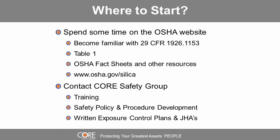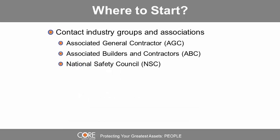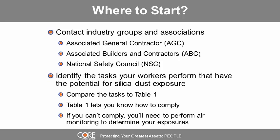You can also contact Core Safety Group for help with training, safety policy and procedure development, creation of a written exposure control plan, and job hazard analysis. Industry groups such as the Associated General Contractors (AGC), Associated Builders and Contractors (ABC), and the National Safety Council (NSC) are also good resources. Identify tasks your workers perform with silica exposure potential, compare those to Table 1, and if you can't comply, perform air monitoring to determine your exposures.